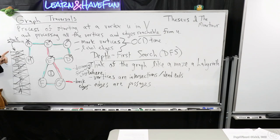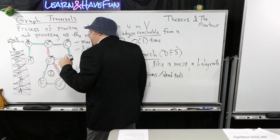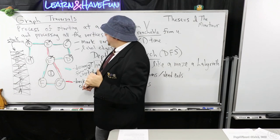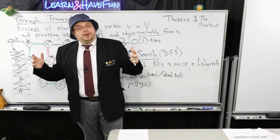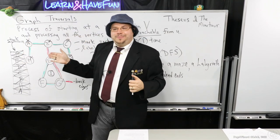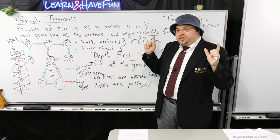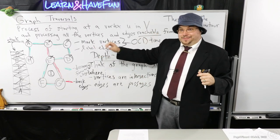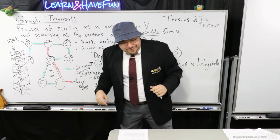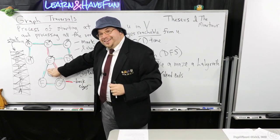Notice that those green edges form a very nice structure — not only what we call a tree, but one that spans all of the vertices reachable from U. Those green edges form a spanning tree of forward edges. We would call this a spanning tree in the truest sense if the graph was connected, since we can't reach I. If we consider the spanning subgraph of those reachable from U, it would be a spanning tree.